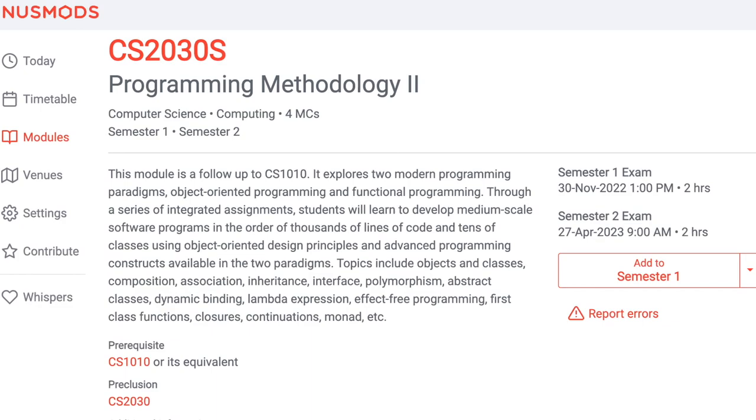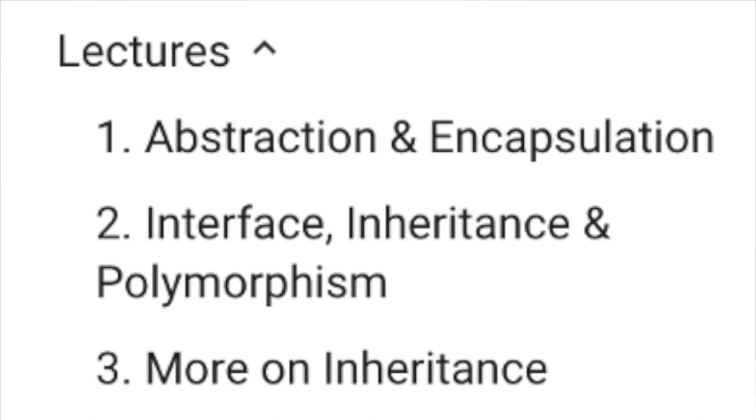Now we move on to the modules I took in semester 2. First up, we have CS2030S Programming Methodology 2, taught by Professor Boyd Anderson and Wee Weisang. This is a continuation from the first programming methodology class the semester before. However, this module is very different from the previous one, as it basically teaches concepts of the Java language. You will take away from this module having a decent understanding of Java and its principles. The first three weeks cover object-oriented programming concepts such as abstraction, encapsulation, inheritance, and polymorphism. You will therefore be exposed to OOP constructs like classes, interfaces, as well as overloading and overriding.